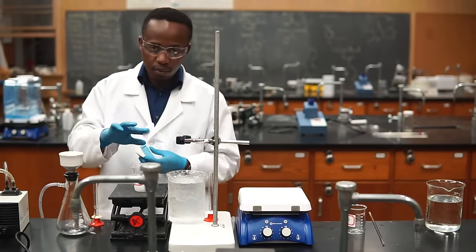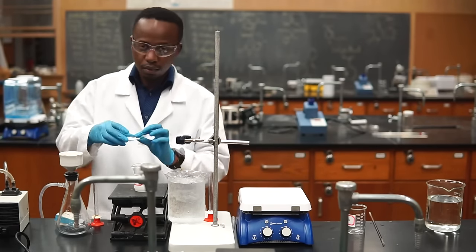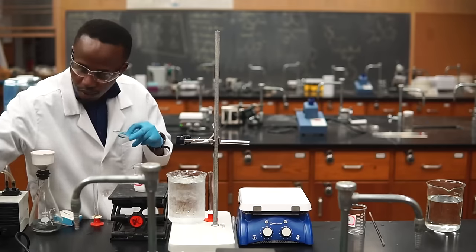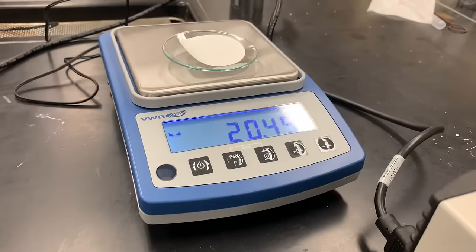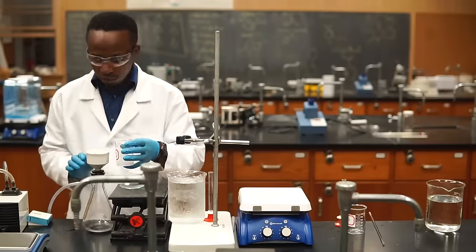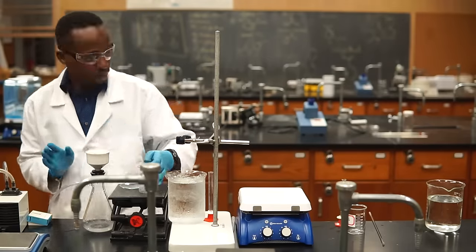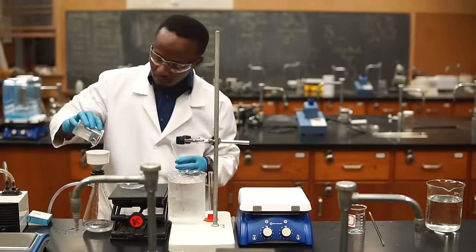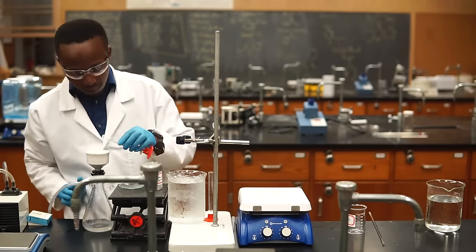Let's bring in the vacuum system again to dry our product one last time. Before we do that, we'll weigh our filter paper and watch glass, as this will be used to measure the mass of our product. Now, let's add the same filter paper to the vacuum system and start filtering. Let this go for a few minutes to make sure it's dry.